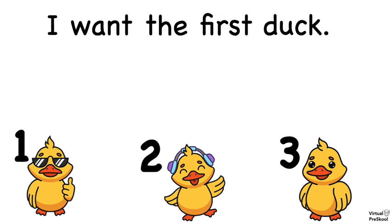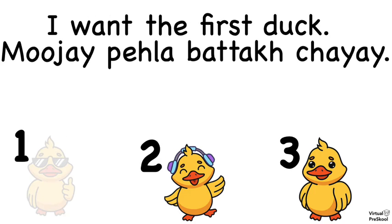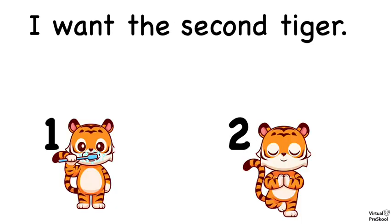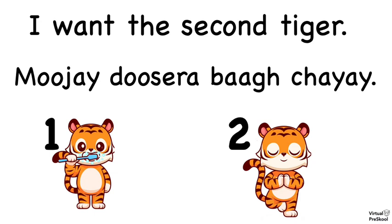I want the first duck: Mujhe pehla batak chayyeh. Again, mujhe pehla batak chayyeh. Pehla means first. I want the second tiger: Mujhe dusara baag chayyeh. Again, mujhe dusara baag chayyeh. Dusara means second.